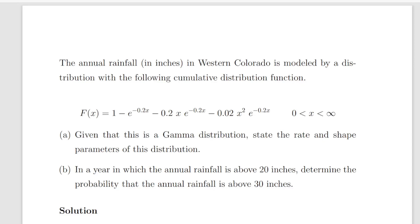In this presentation we are going to look at the gamma distribution. The annual rainfall in inches in western Colorado is modelled by a distribution with the following cumulative distribution function.